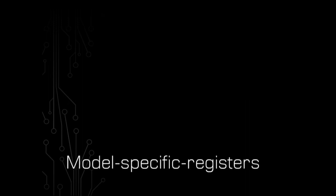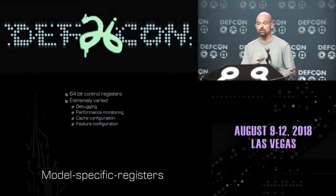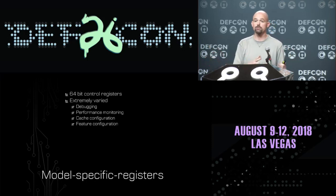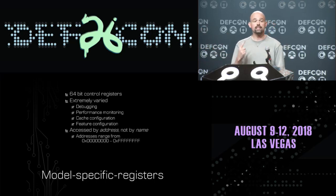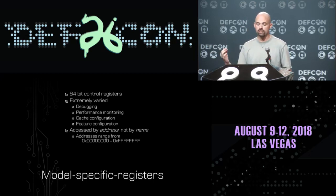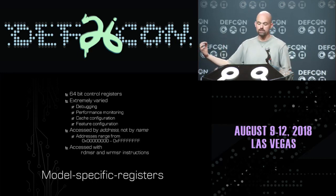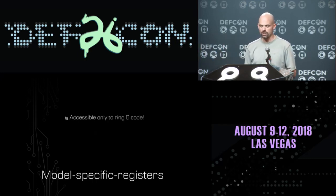Where do we begin? Let's look at these model specific registers. MSRs in x86 are basically 64-bit control registers used for a wide variety of things — debugging, performance monitoring, cache configuration, feature configuration. Unlike the x86 registers you might be more familiar with, they aren't accessed by name; they're accessed by address. So instead of EAX and EDX, we have addresses from 0 to 4 billion to access our MSRs. You load up an address into the ECX register and then execute the read MSR or write MSR instructions.